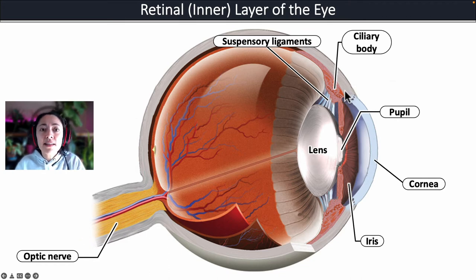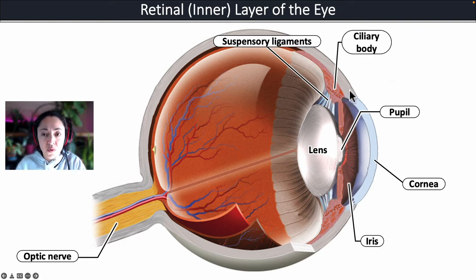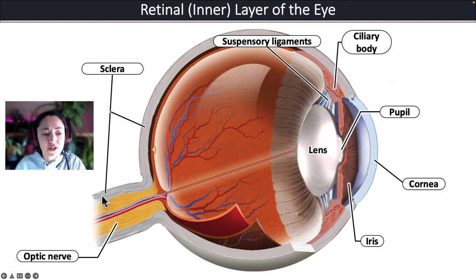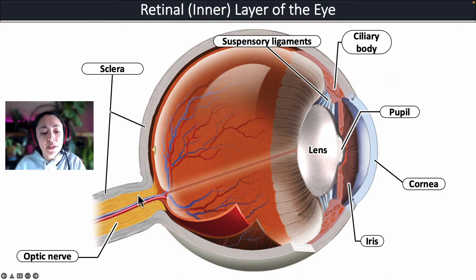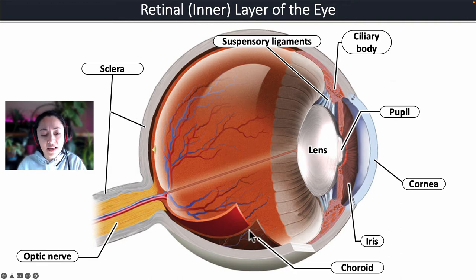Now let's look at the three major layers that surround the eyeball. Starting from the edge of the cornea going all the way around the eye and even over the optic nerve is called the sclera — this is a very thick connective tissue layer. Below the sclera we have what we call the choroid, which is a pigmented layer, and then we have the innermost layer, which is the retina.